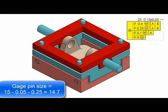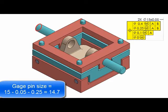Their size is going to be the smallest size of the holes which is 15 minus 0.05 then minus the 0.25 position tolerance.